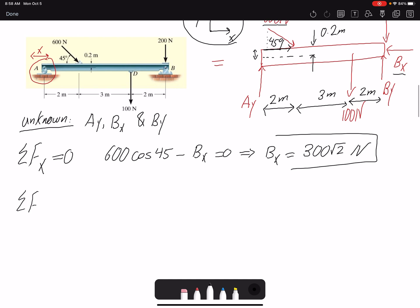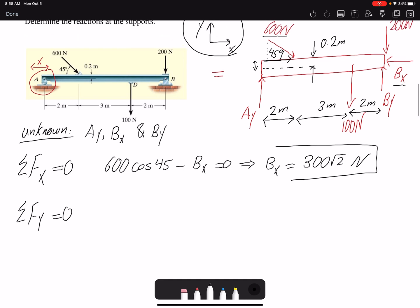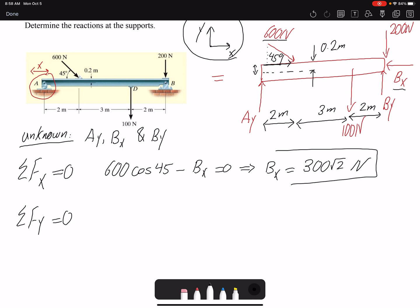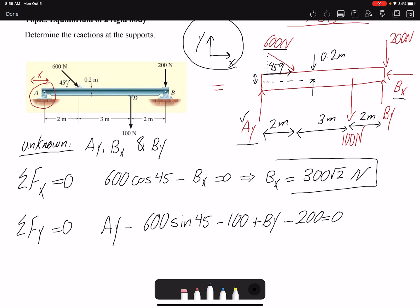Then I can write summation of forces in y. I start from the left and go to the right. I start with Ay, then my 600 newtons is going to have a negative y component which would be sin 45°, then I have -100, then By, then -200. I always count the number of forces in the equation to make sure I haven't missed anything. So I have Ay - one component, this is going to have a component - two, three, four, five. And I have here one, two, three, four, five, so I've included everything.